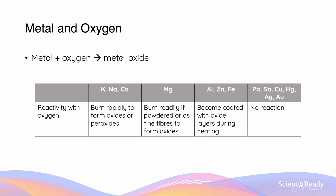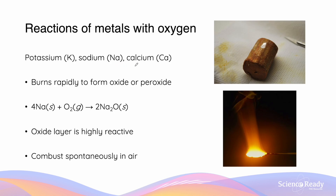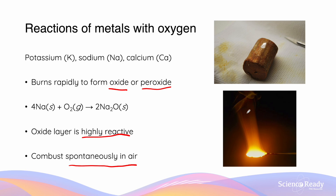Metals will react with oxygen to form a metal oxide. To make the reaction occur faster, the metals are usually combusted — reacted with oxygen at high temperatures. Potassium, sodium, and calcium will burn very rapidly to form an oxide or a peroxide. The oxide layer formed is highly reactive and will combust spontaneously in air. Sodium covered in oil does not show spontaneous combustion, as the oil prevents reaction between the oxide and atmospheric oxygen.